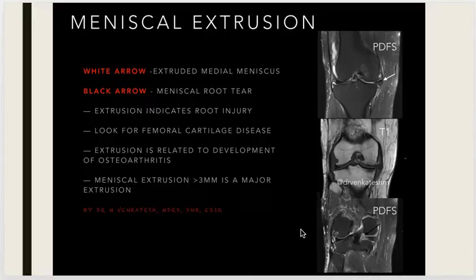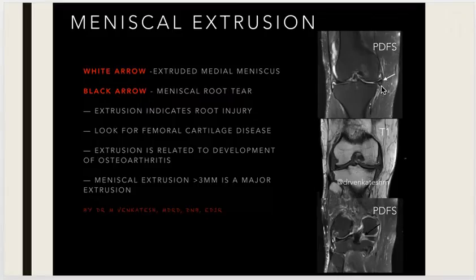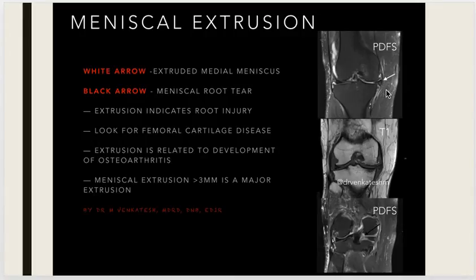Whenever the extrusion is more than 3mm, we need to measure the distance from the tibial margin to the medial-most aspect of the extruded meniscus. If it is more than 3mm, it is considered a major extrusion. Usually surgery is not done in cases of meniscal extrusion; sometimes partial meniscectomy can be performed, but complete meniscectomy can lead to progression of osteoarthritis, so as much of the meniscus as possible is preserved.